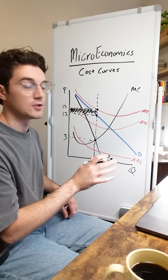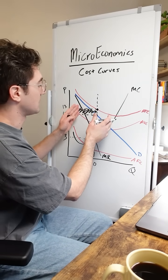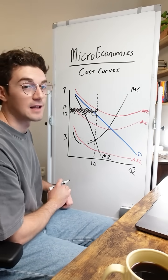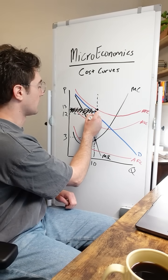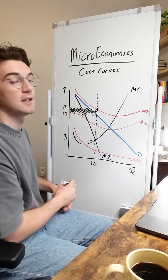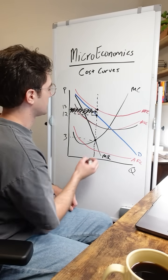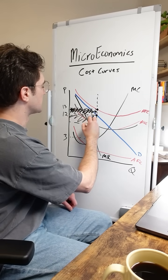The ultimate thing that you need to start paying attention to is not where the ATC lies, but rather at our profit maximizing quantity, does ATC lie above the price that we're charging on the demand curve? Above like this right here, they're going to be generating a loss. If it were below like this, well, they'd be generating a profit here of this rectangle instead.